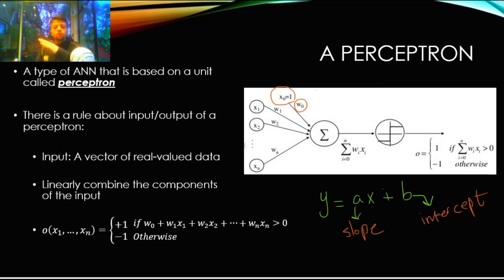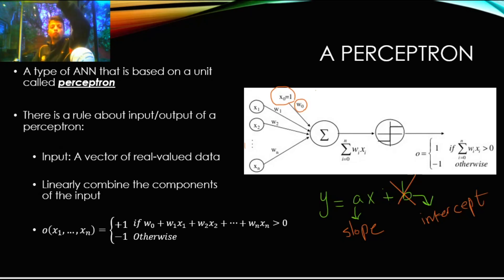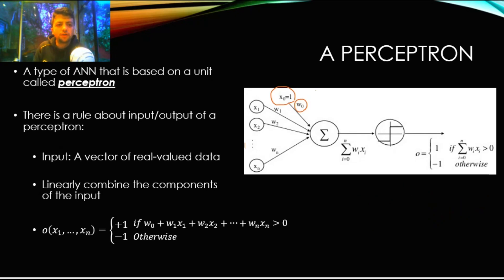The intercept B controls how high or how low that line sits in your space. Without B, the only thing you can control is the slope A — you can't move the line up or down, which severely limits your flexibility. The same logic applies to our perceptron: W0 acts like that intercept B, giving the linear combination the flexibility to shift, and that is why it's important to have W0.